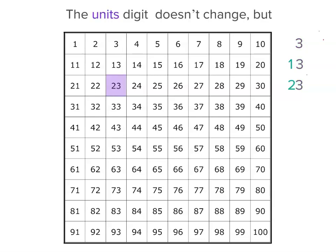So the units digit isn't changing here, is it? If you have a look down that column, there's a three in the units place. So let's add ten again. We've got three units and three tens. The tens digit is getting bigger every time we add ten, but the units digit is not changing.